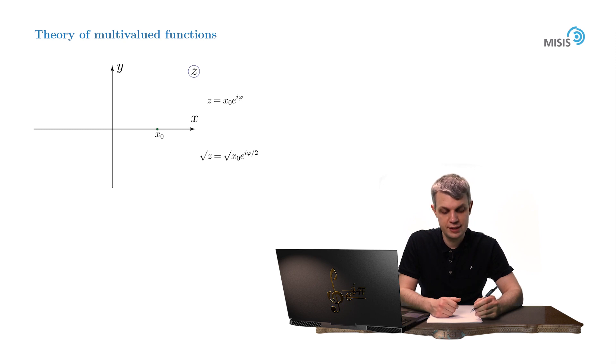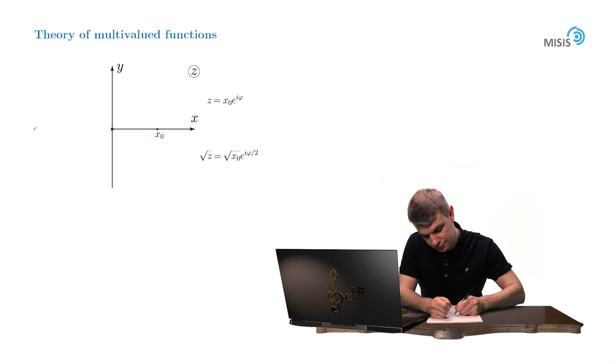And now let's see what's going to happen with our beloved square root of z. Once we draw a branch cut, say, along the negative real semi-axis.